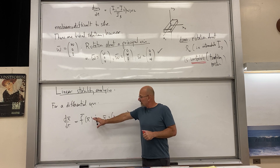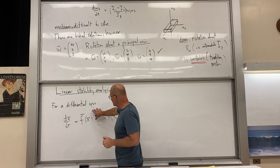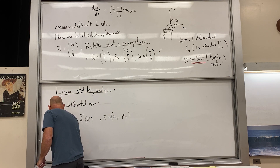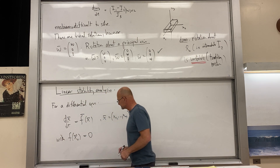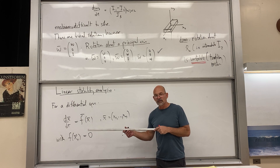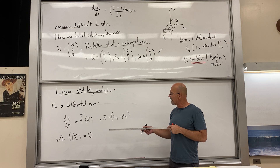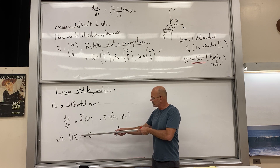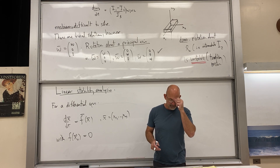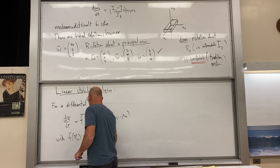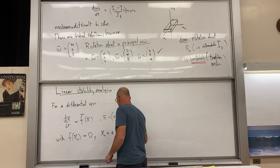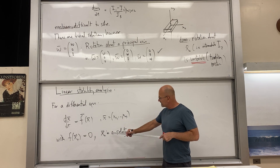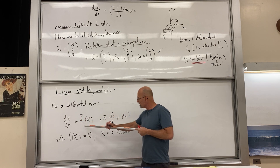In the case of the Euler equations, our x is (omega-1, omega-2, omega-3), a three-component vector, and you'll notice the right side is a vector function of those variables — three components, three equations. This is just a generalization naming the components x1 to xn instead of omega-1 to omega-3. These equations do have seemingly trivial solutions: if f(x0) equals zero, then x0 is a stationary solution, because its derivative is zero and f of x0 is zero.